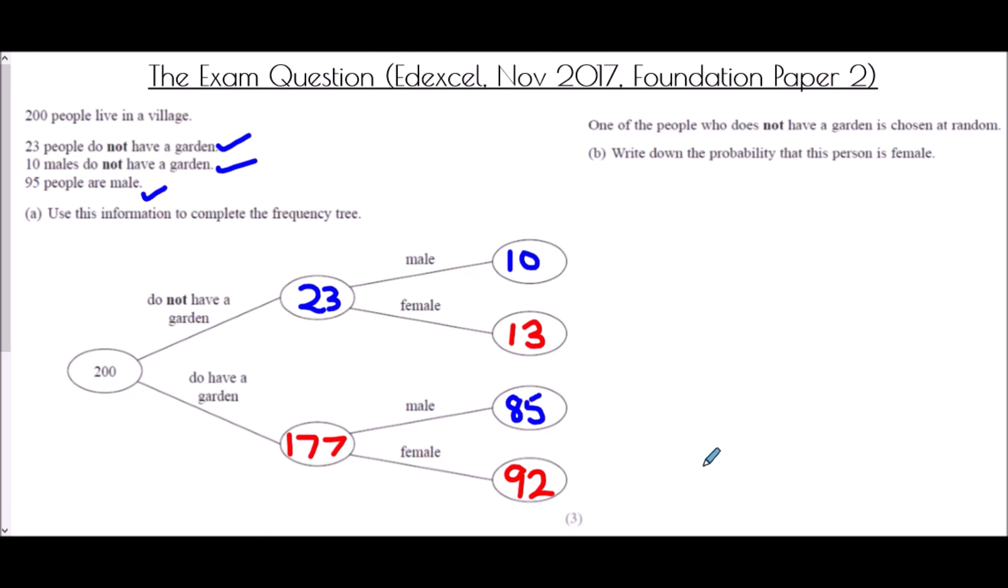But then we have a question about probability. One of the people who does not have a garden is chosen at random. So this is the very first people. It's one of the people who does not have a garden. Therefore, the only ones I'm interested in are the 23 who do not have a garden. It says then, what is the probability that this person is female? Well, of the 23 people who do not have a garden, 13 are female. And that is our probability. That can't be simplified. Well, 13 over 23 is the final answer.